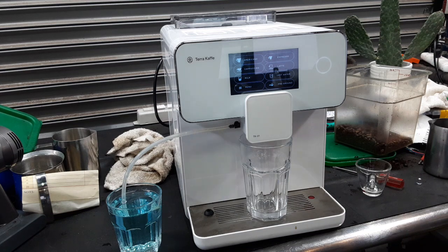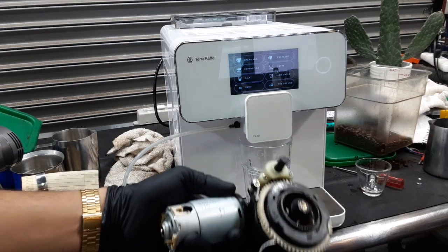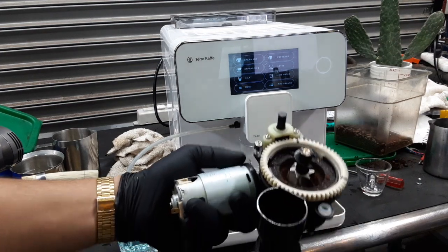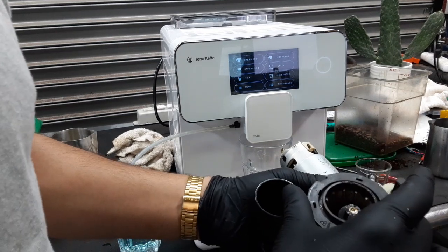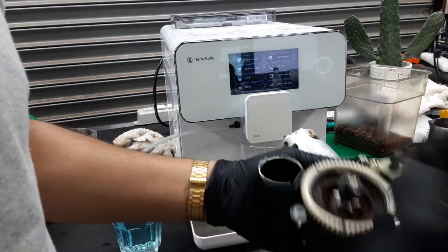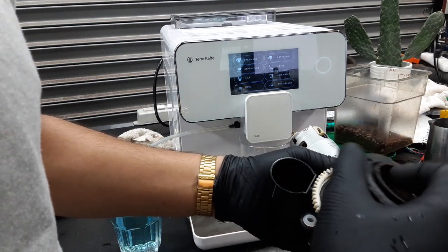For this machine, we had to replace the grinder because pre-ground coffee was getting stuck and fed into the hopper, which caused a lot of coffee buildup inside.